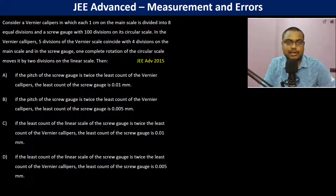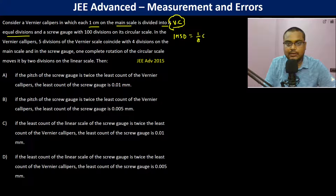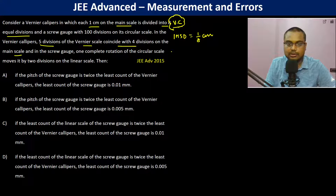Consider the vernier calipers in which one centimeter on the main scale is divided into eight equal divisions. So one main scale division is 1/8 centimeter. Five divisions of the vernier scale coincide with four divisions on the main scale, so 5 VSD equals 4 MSD.